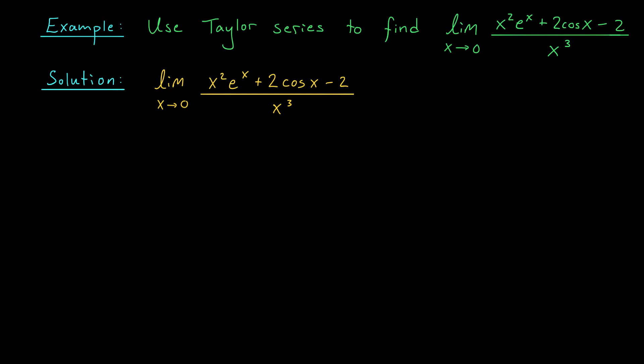So I noticed that I have a couple familiar functions in this limit, e to the x and cos x. I'm going to try to cancel this x cubed term on the bottom by writing out the Maclaurin series for these two functions. So I have the limit as x goes to zero, and in the numerator I have x squared. Now I'd like to write out the Maclaurin series for e to the x. How many terms should I write down?